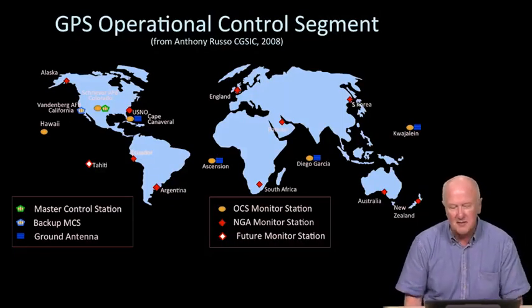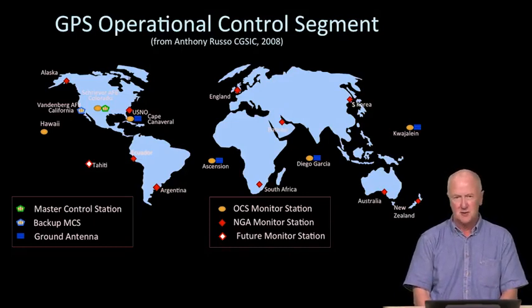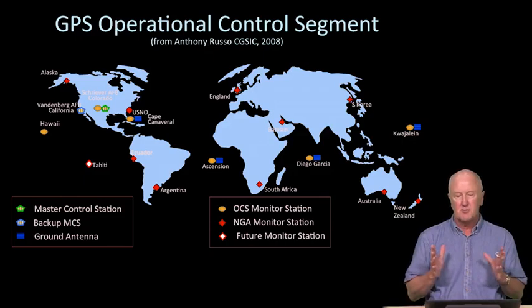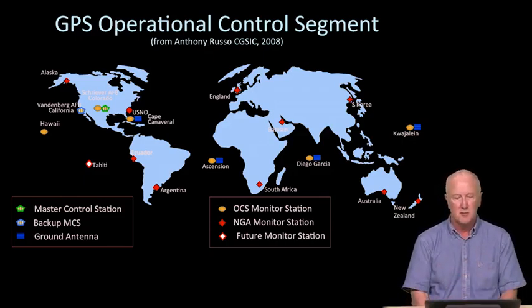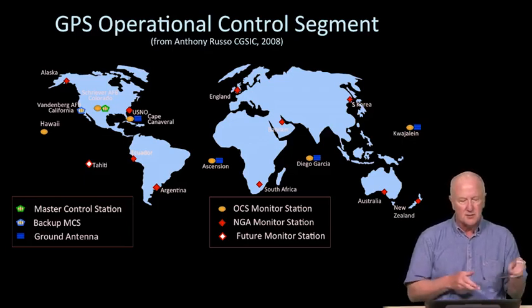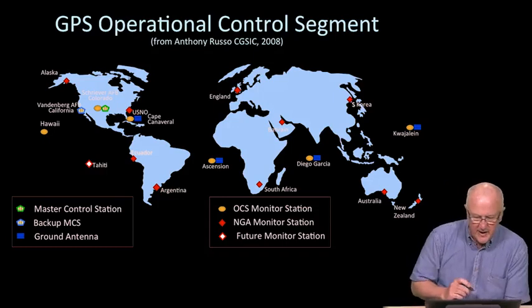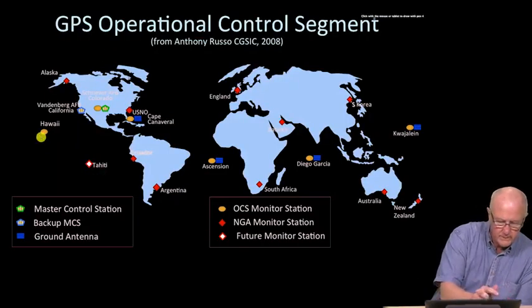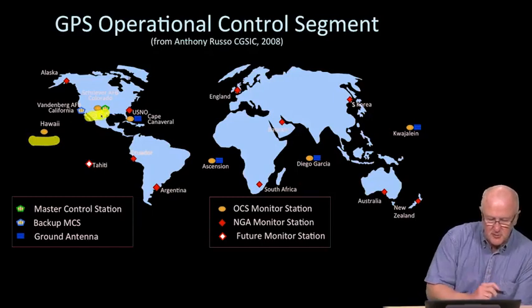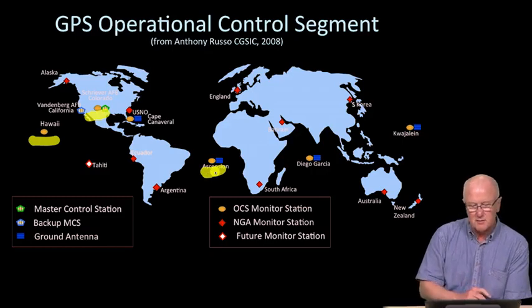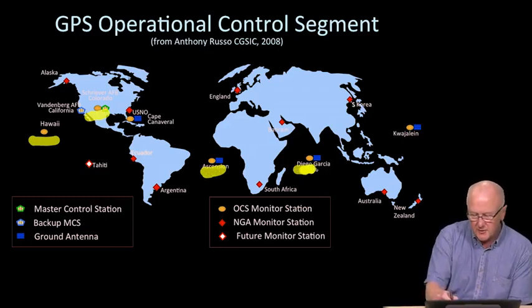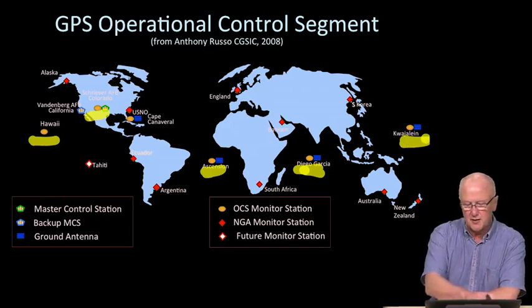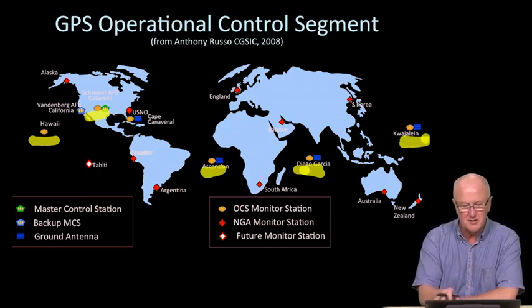We have a look at the GPS operational control segment, otherwise known as the ground control segment. This is back in 2008, but the architecture or topology of the operational control segment doesn't change much year to year. If you look closely, you'll see this is nicely color-coded. The original GPS stations were in Hawaii, Shriver Air Force Base in Colorado, Ascension Island out in the middle of the South Atlantic, Diego Garcia in the middle of the Indian Ocean, and Kwajalein here in the Western Pacific.